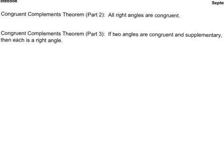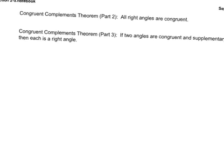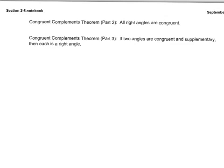A couple more theorems that we are going to talk about are the congruent complements theorem, part 2 and 3. Part 2 says that all right angles are congruent. So, if you have two 90 degree angles, those angles are congruent to each other. And, then part 3 says, if two angles are congruent and supplementary, then each is a right angle. And, here's the picture to that. We have two angles that are congruent, and they add up to 180. And, each of those must be a right angle. Now, we're not going to prove these in class, but we are going to prove the first three in class. So, we'll see you in class.